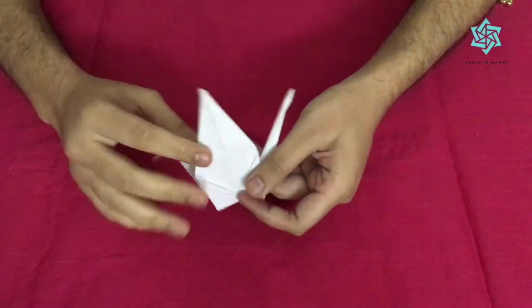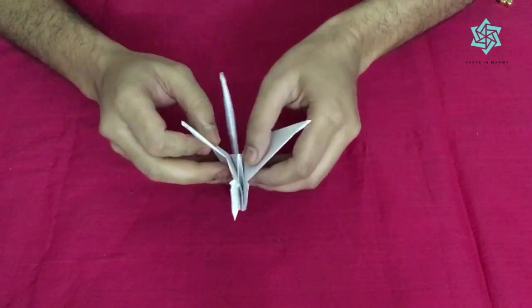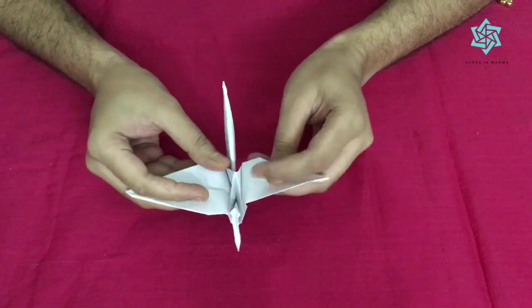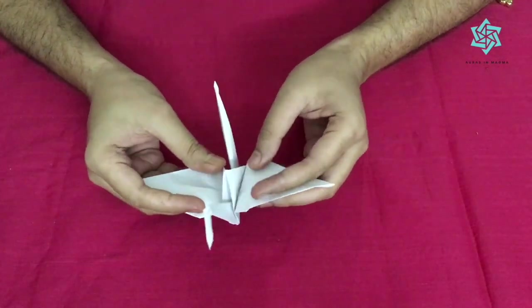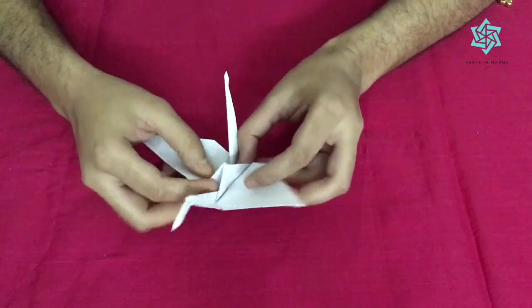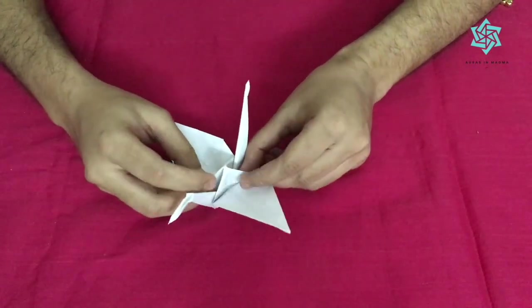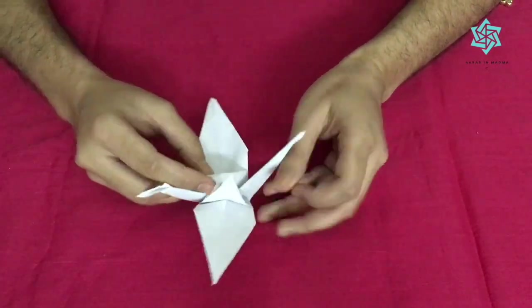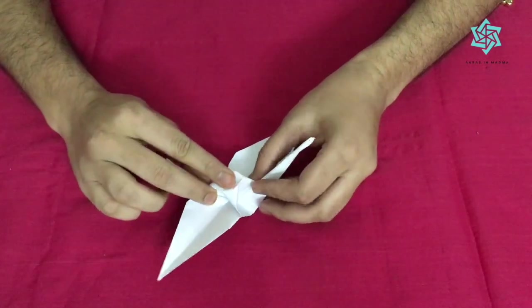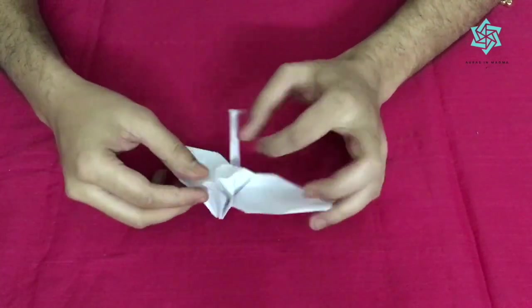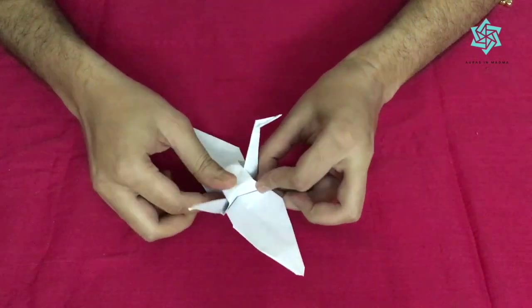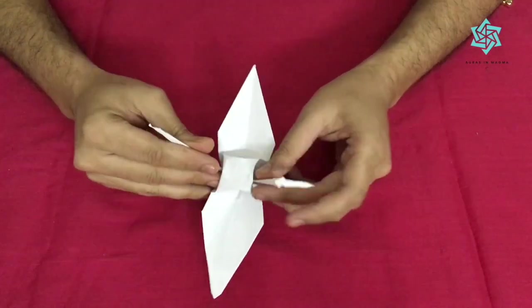And there you go, you have a crane. What I like to do is I actually like to see it when these wings are coming outside. For that we'll have to flatten this top part, this top triangle. We'll just push this, pull this apart a bit and flatten it from the top. And there you go, you have your crane.